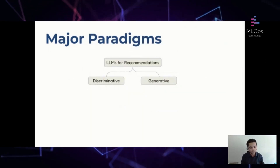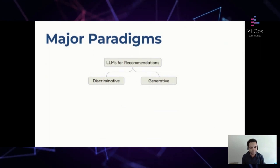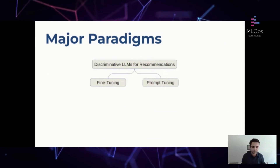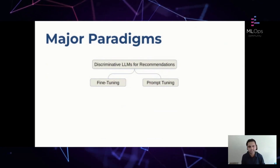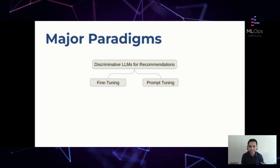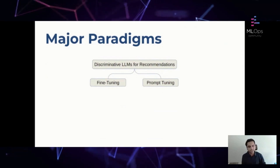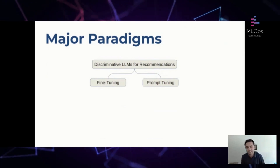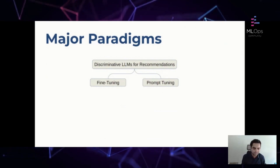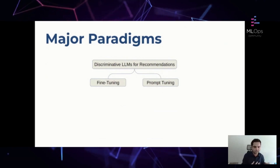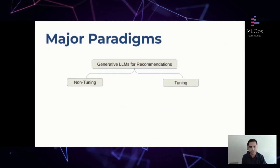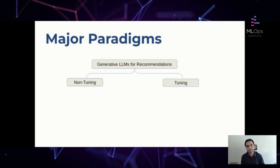One way to look at the current state of this work is to categorize it into discriminative and generative approaches. In the discriminative paradigm, language models have mainly been used to provide embeddings for downstream tasks — BERT-series models usually fall in this category. These can be further classified into fine-tuning, where the pre-trained language model is tuned with task-specific data, and prompt tuning, where the tuning objective of the downstream task is aligned with the pre-training loss.